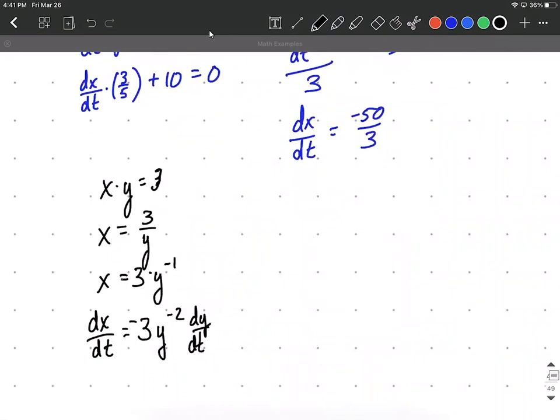So we can plug in here and we can say dx/dt is equal to negative 3 over y squared times dy/dt. So we can say negative 3 over 3/5 quantity squared multiplied by dy/dt that was given to us to be 2.